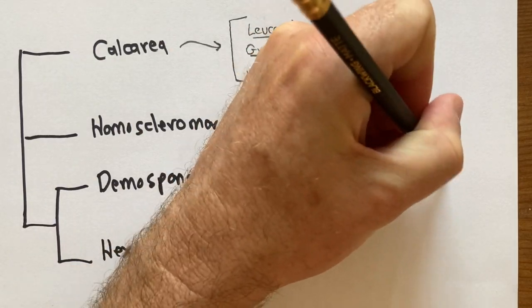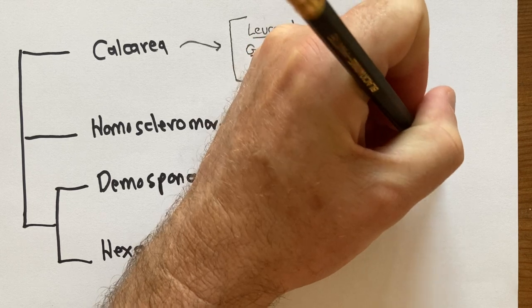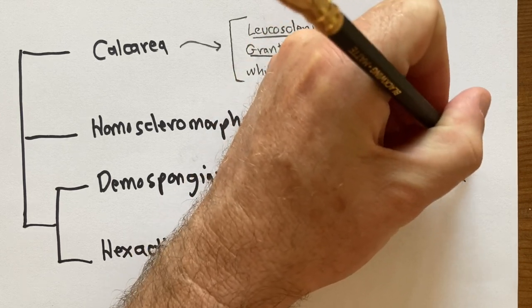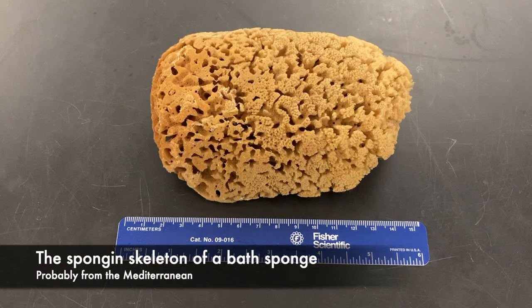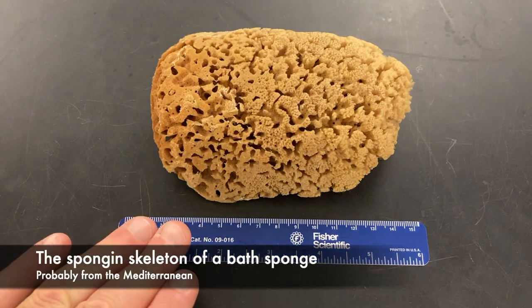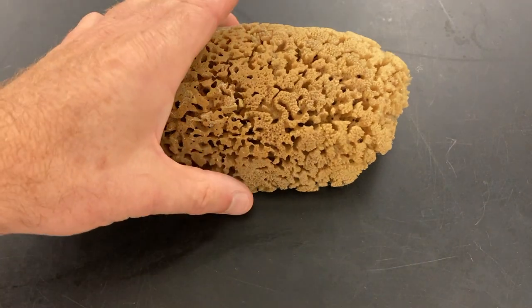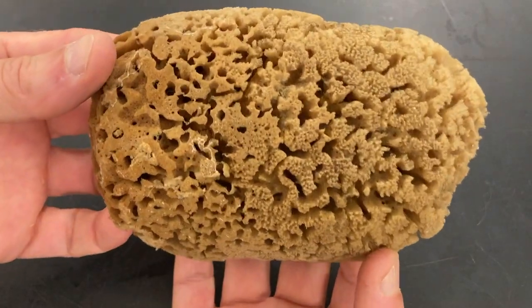Surprise, by which I mean I just remembered. We have one more demosponge to look at, a bath sponge. This is a sponge that has a spongin-only skeleton with no spicules, either siliceous or calcareous. You can imagine that bathers appreciate the absence of spicules in these sponges.